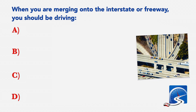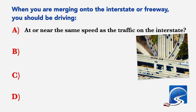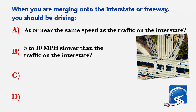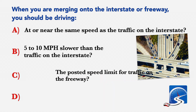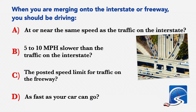When you are merging onto the interstate or freeway, you should be driving at or near: A: The same speed as the traffic on the interstate. B: 5 to 10 miles per hour slower than the traffic on the interstate. C: The posted speed limit for traffic on the freeway, as fast as your car can go. Correct answer A: At or near the same speed as the traffic on the interstate.